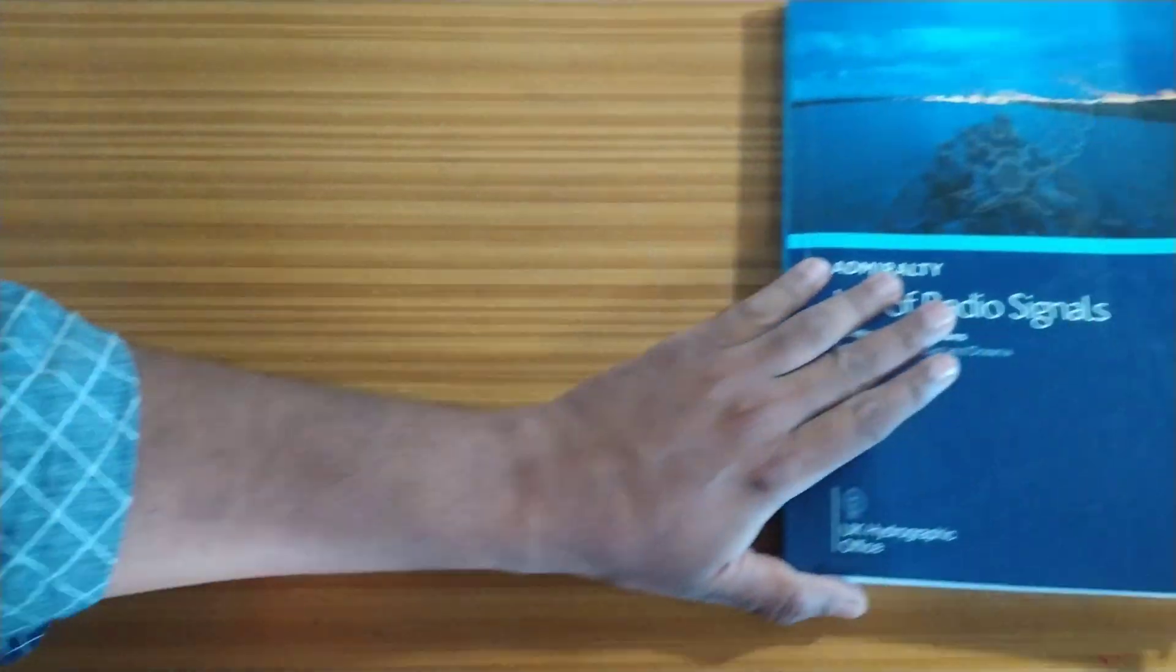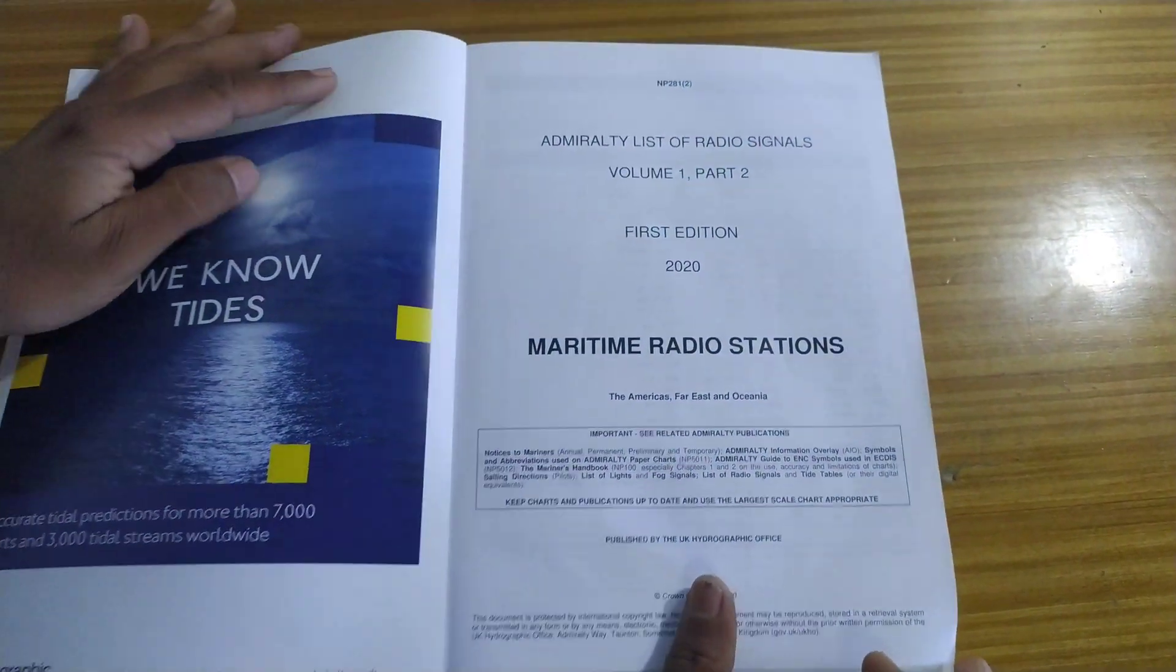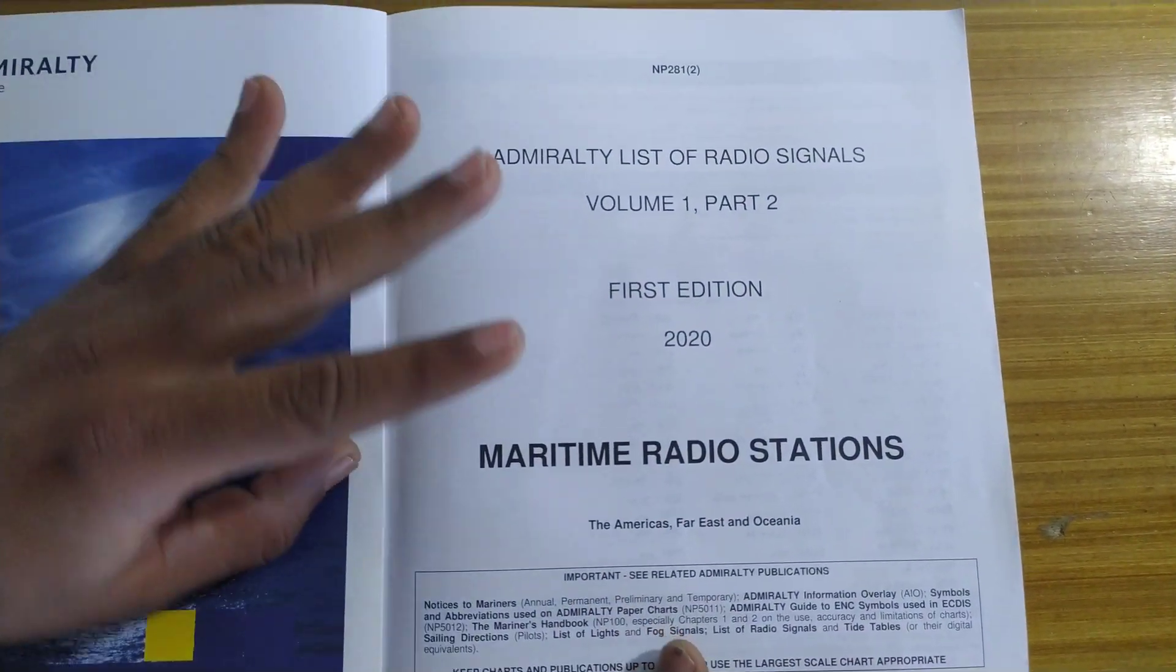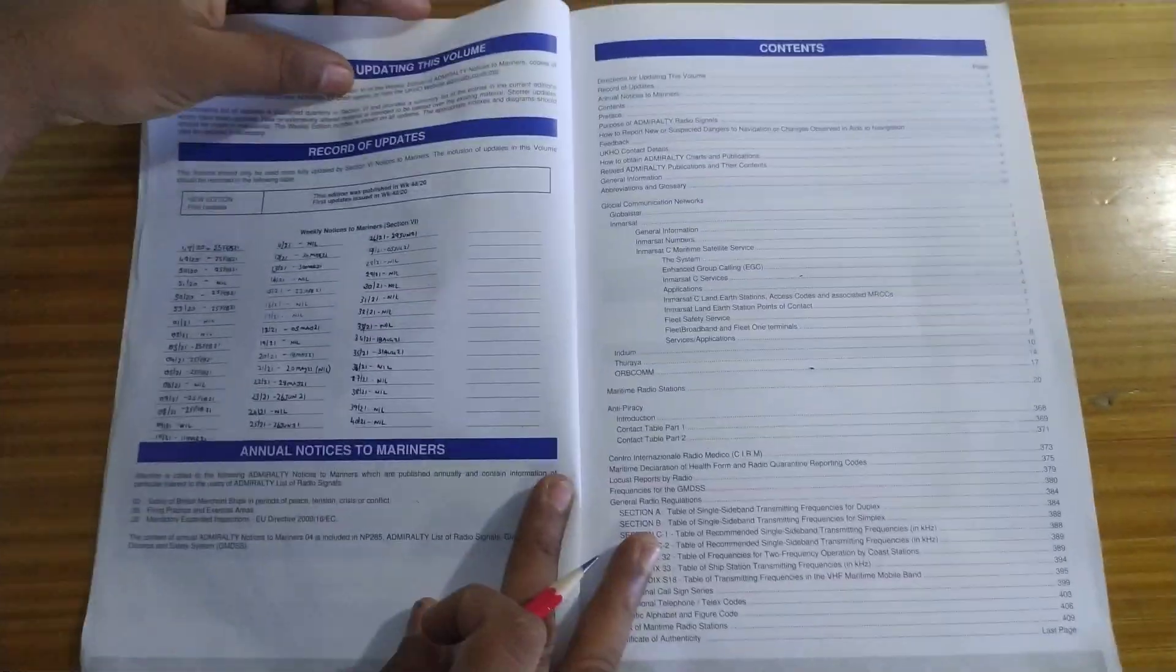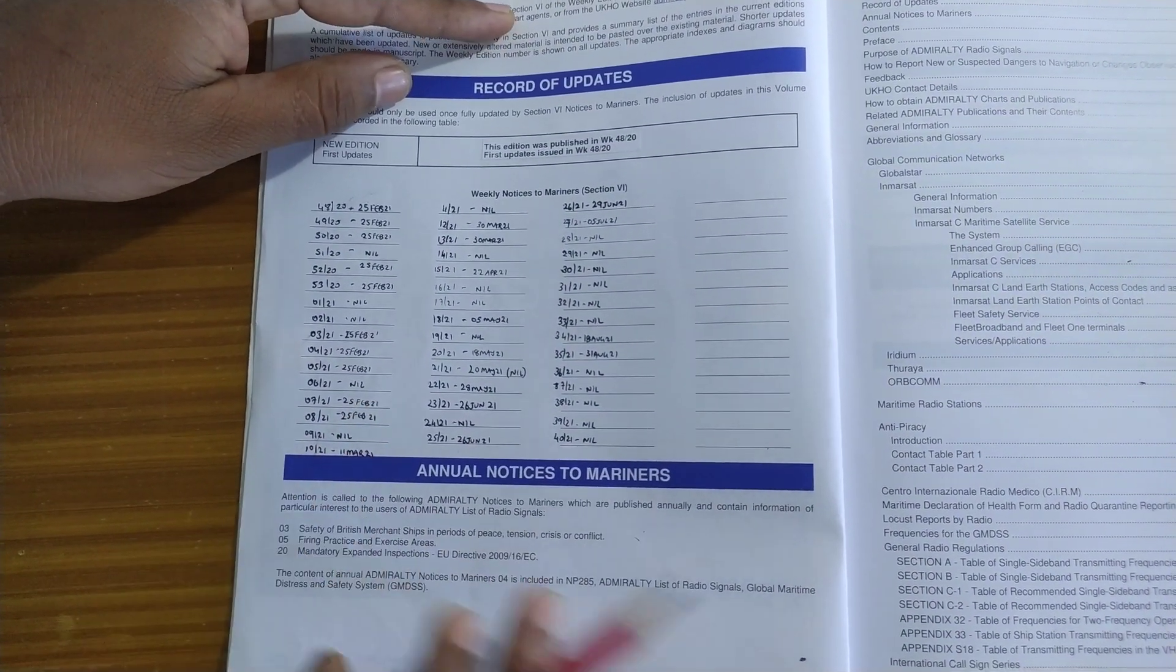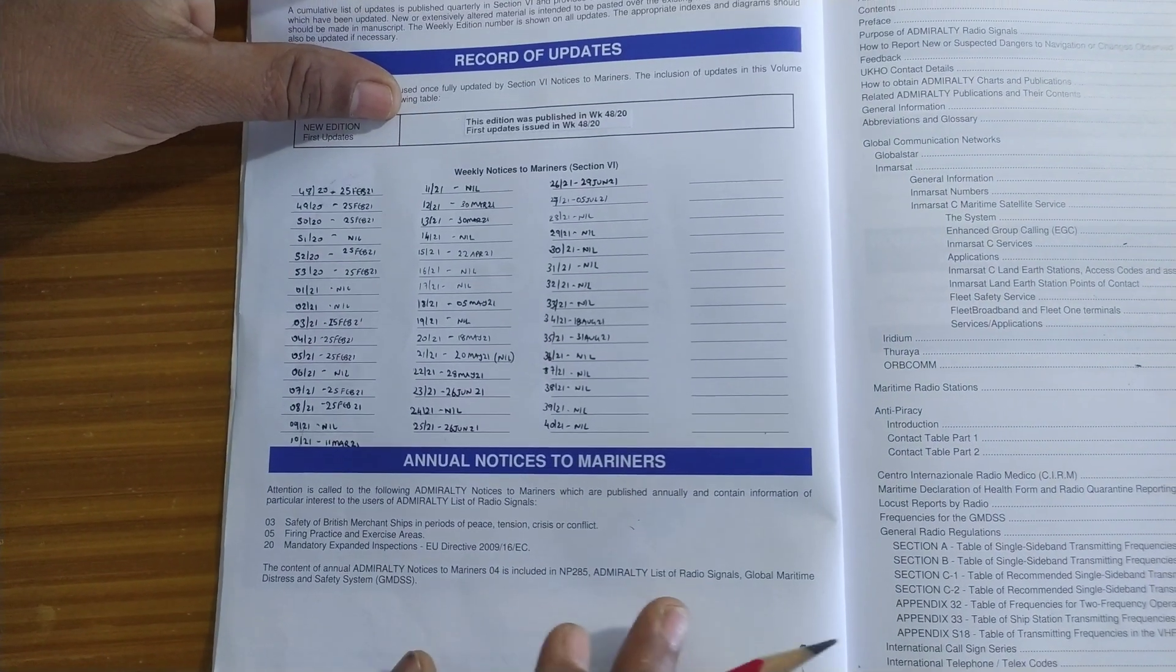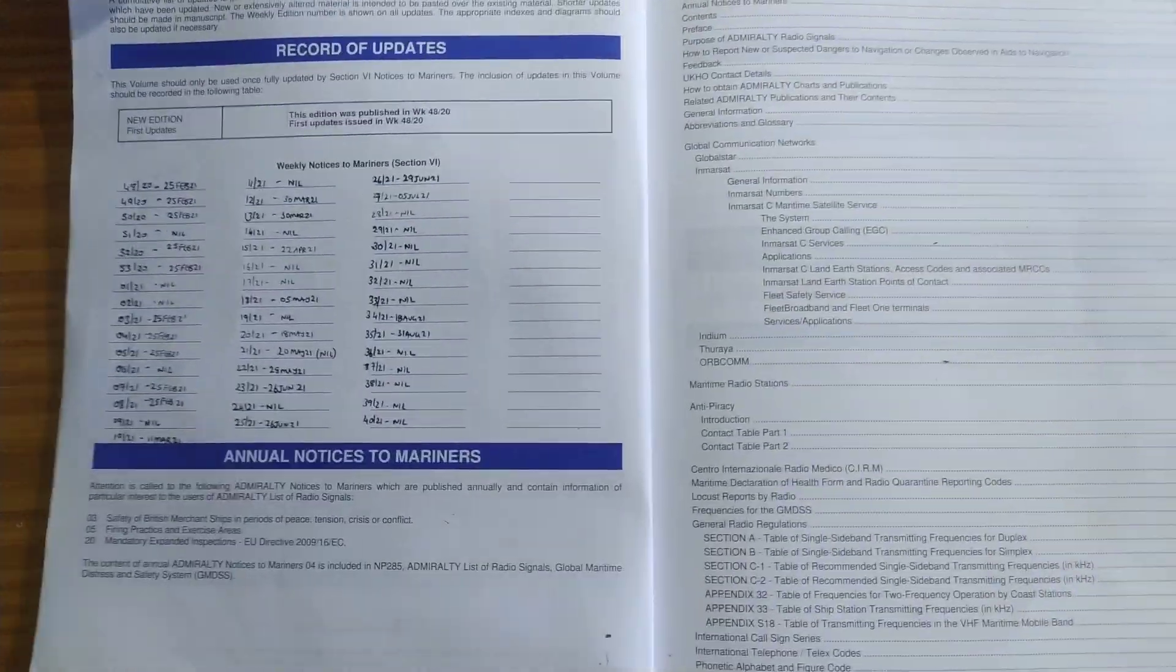Now let us go into the ALRS Volume 1. This is ALRS Volume 1. This had been received before my coming on board, so the date of receipt was not written. Next comes the record of all the updates. I have already made a video about how to correct the ALRS. Once you understand how to correct one ALRS, it is the same that is applicable to all the ALRS. Please check that video.